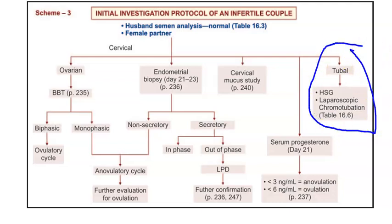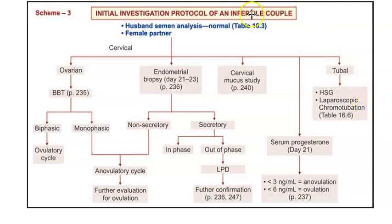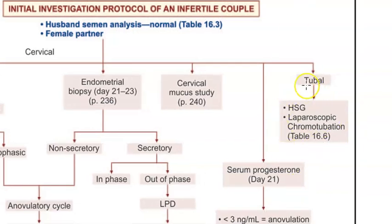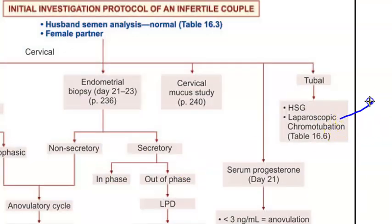For tubal patency, you're checking if the fallopian tubes are open. They do hysterosalpingography or laparoscopic chromotubation. Laparoscopy will help not just in diagnostics but also in fixing the issue - when you do a laparoscopy you can remove adhesions if they are present. So laparoscopic intervention is not just an investigation; you can also fix the issue.